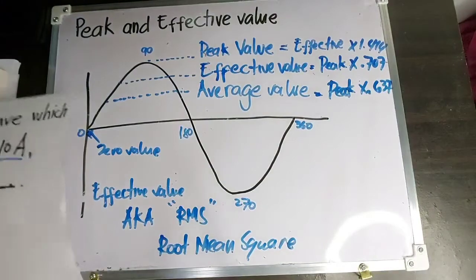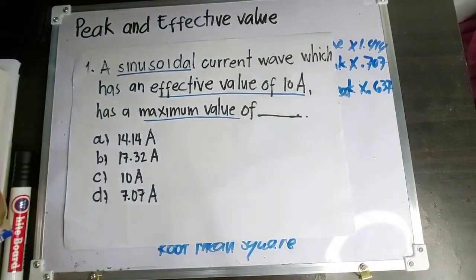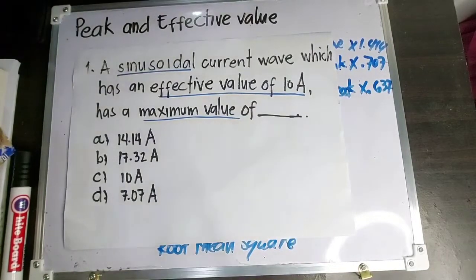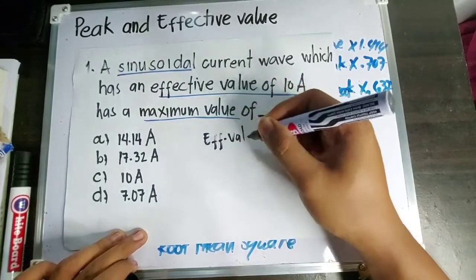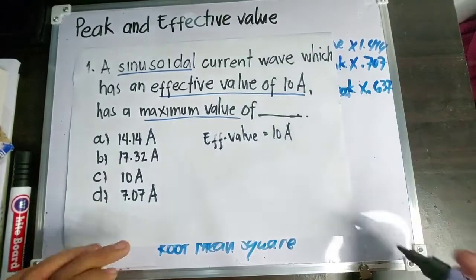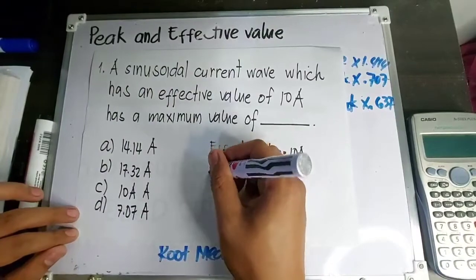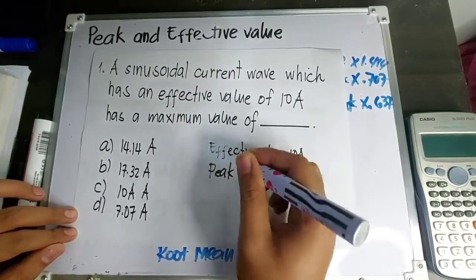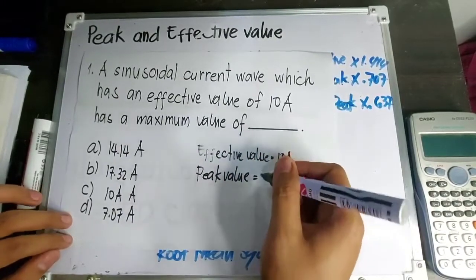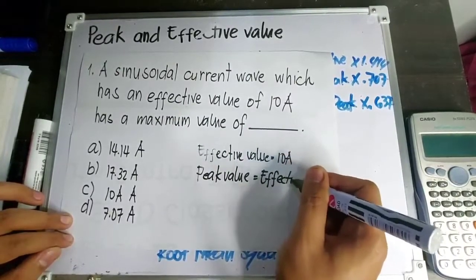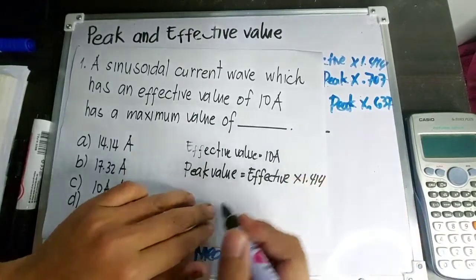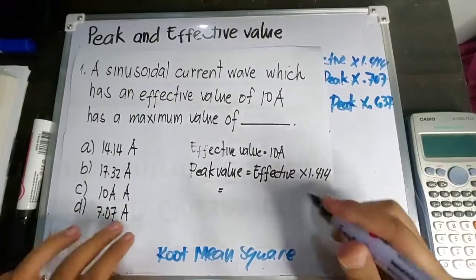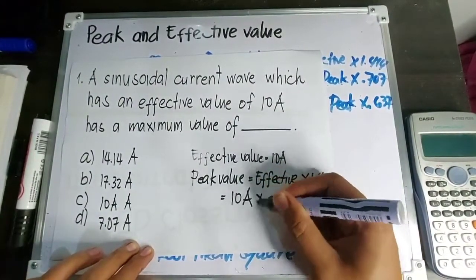Paano natin siya isosolve? Madali lang. Ang given natin is effective value, which is 10 ampere. Ang formula para makuha yung maximum value: peak value is equal to effective value times 1.41. Effective value natin is 10 ampere times 1.414.